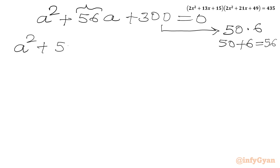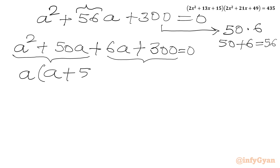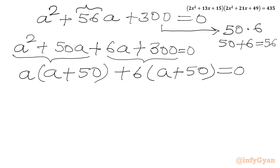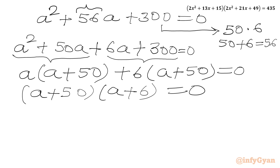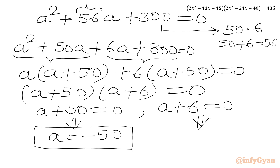So: a² + 50a + 6a + 300 = 0. We take a common from the first two terms and 6 common from the last two: a(a + 50) + 6(a + 50) = 0. Now (a + 50) is overall common, giving (a + 50)(a + 6) = 0. Applying the zero product rule: either a + 50 = 0 or a + 6 = 0. So a = −50 or a = −6.